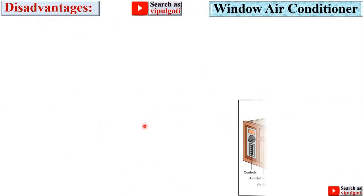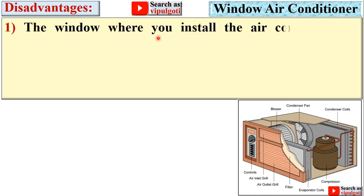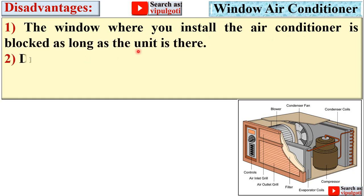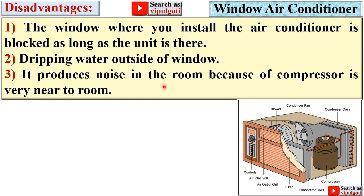Now disadvantages of window air conditioner. The window where you install the air conditioner is blocked as long as the unit is there. Dripping water outside of window. Also it produces noise in the room because the compressor is very near to the room.